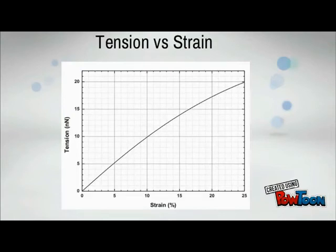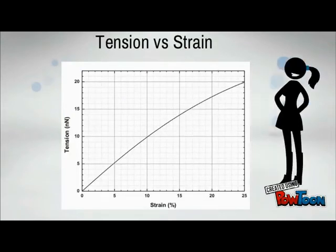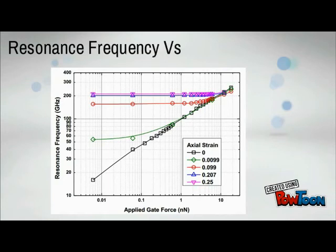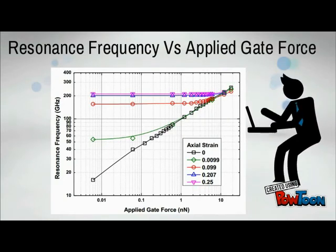Tension versus strain. The graph shows that the tension linearly increases with increasing axial strain for strain less than 10%, whereas the rate of increase of the tension decreases with the axial strain for strain bigger than 10%.